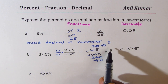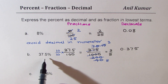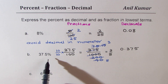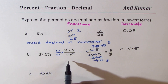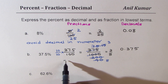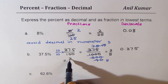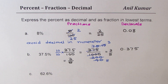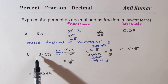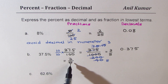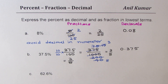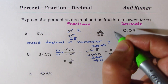So 3 over 8 is this fraction in the lowest terms. Let me rewrite this here as 3 over 8. So 37.5% as a fraction is 3 over 8, and in decimals we could write it as 0.375.